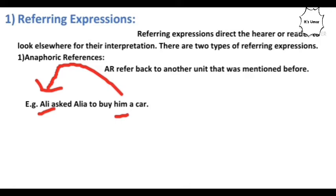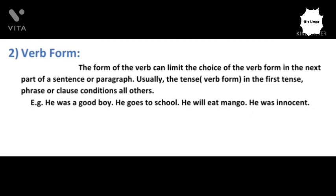The second type of referring expression is cataphoric references. Cataphoric references refer ahead to another unit that is mentioned later. For example: 'Waving at him happily, Ali saw Aslam come out.' Here, 'him' refers ahead to another unit mentioned later in the text, which is Ali. Such kind of reference is called cataphoric reference.